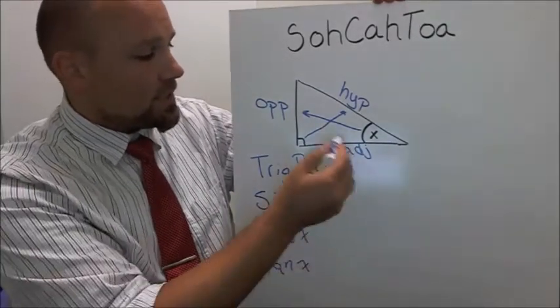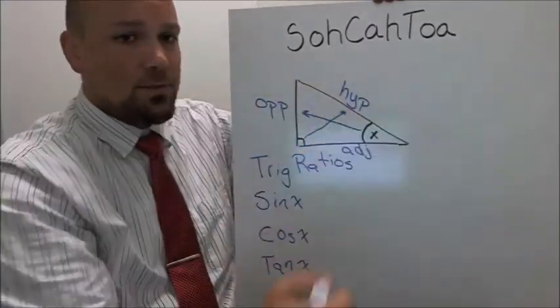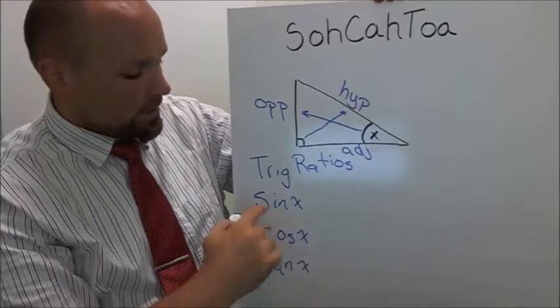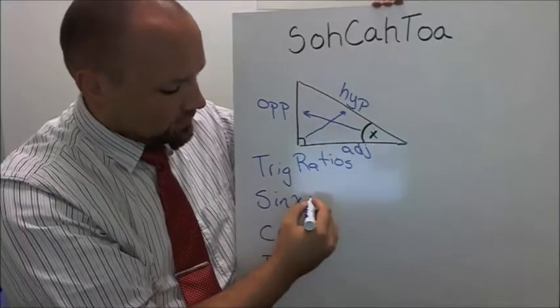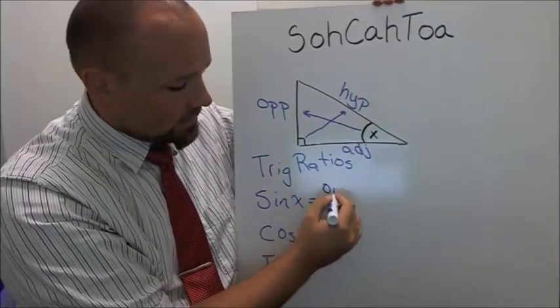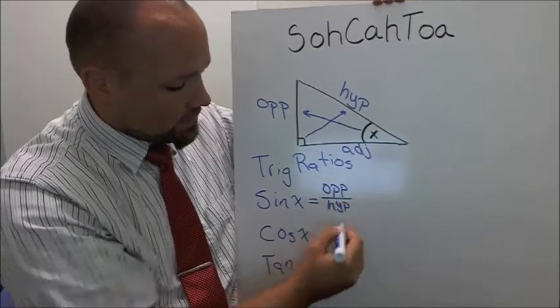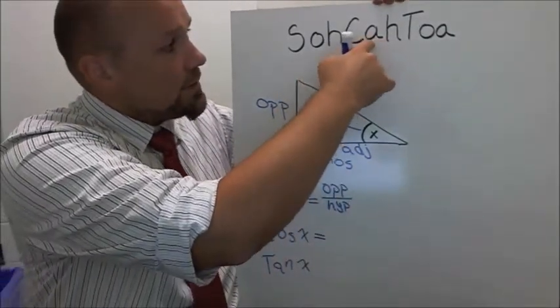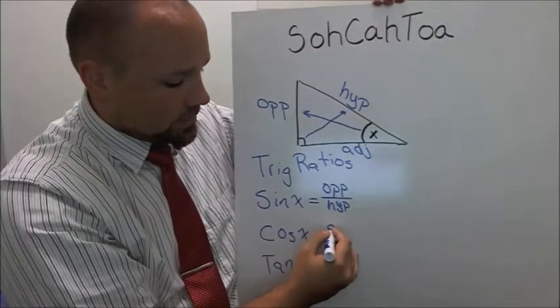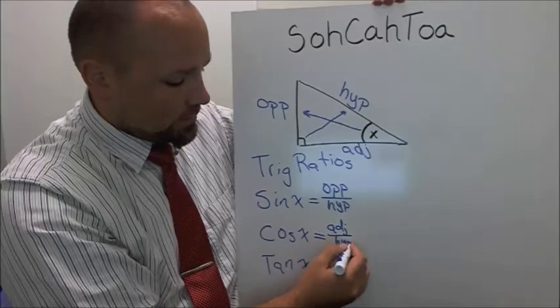So we have adjacent, opposite, and hypotenuse. And that's what this acronym helps us do. It helps us remember that sine of x is opposite over hypotenuse. So sine of x is opposite over hypotenuse. Cos of x is CAH, so adjacent over hypotenuse.